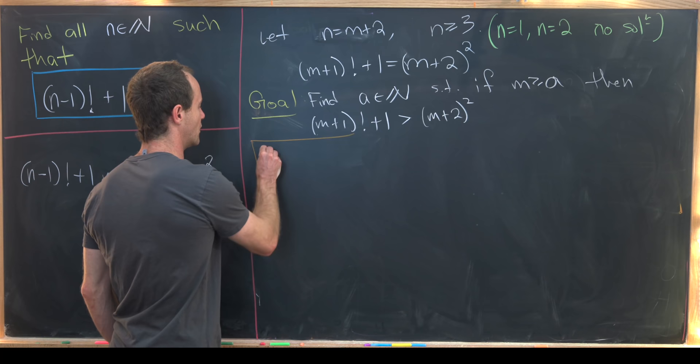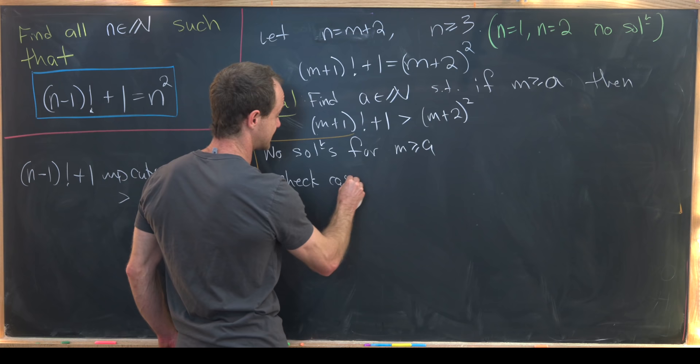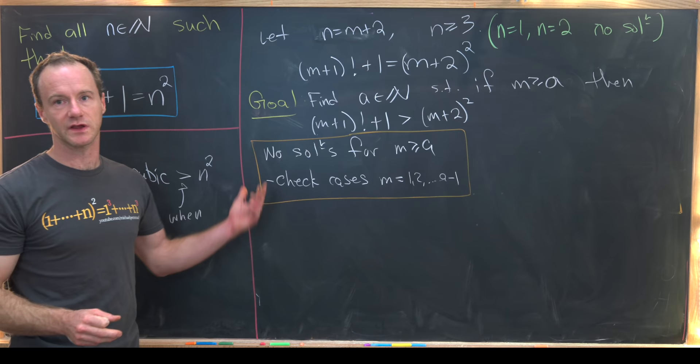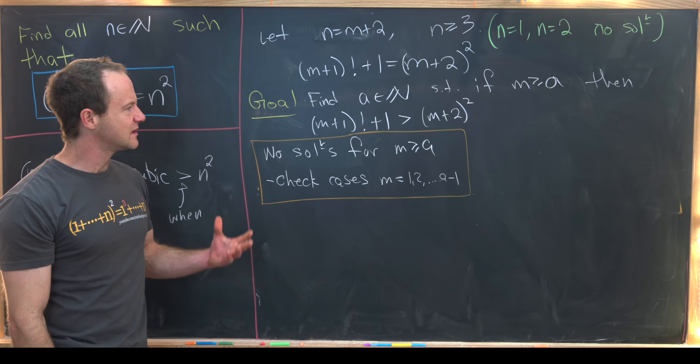Then if we find that a then it's pretty clear that there will be no solutions for m bigger than or equal to a which leaves us just to check the cases for m equals 1, 2, all the way up to a minus 1. So obviously if this a is some large number like 470 this is not really good. So obviously if a is a sizable number this is not efficient but hopefully a will be fairly small.